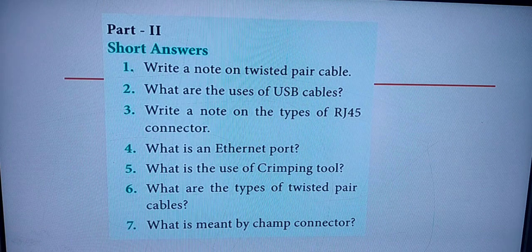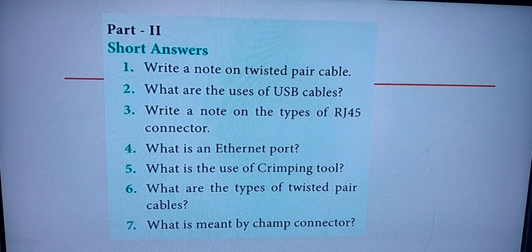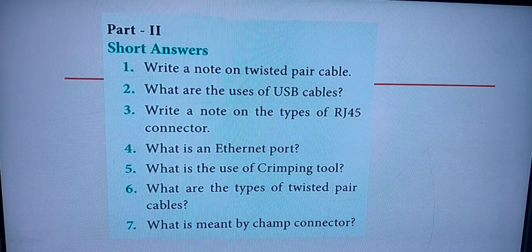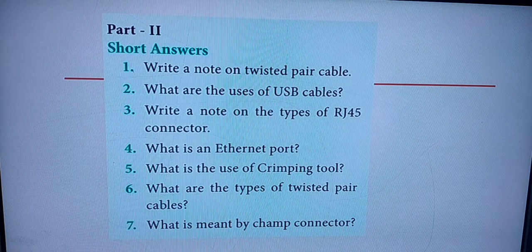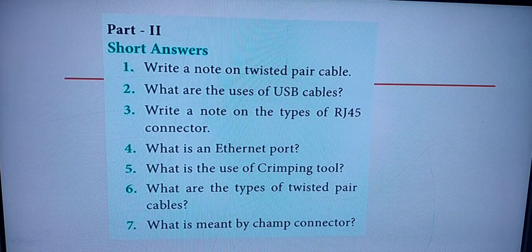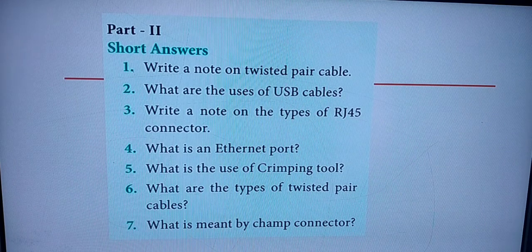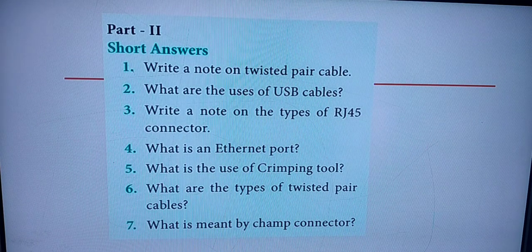Sixth question: what are the types of twisted pair cables? Come to page number 186. In the twisted pair cables paragraph, mark from the line 'There are two types of twisted pair cables' — that is UTP and STP — from the 11th line from the bottom, till the last line ending with 'wires from external interference.' That is Roman numeral II.